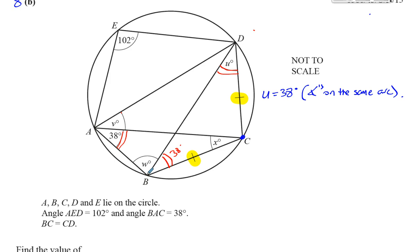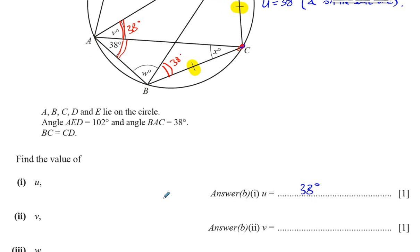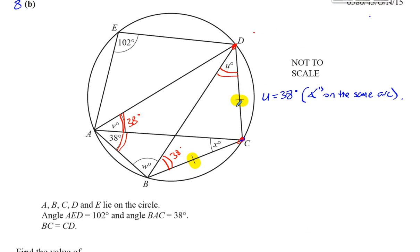Now, where does this 38-degree angle stand? It stands on C and D. So the angle goes back to C and it goes back to D. And what other angle stands on C and D? Well, it's V — V also goes back to C and D. Both of them are on the circumference and in the major sector compared to chord CD. So angle V must also be the same as that — V is equal to 38.